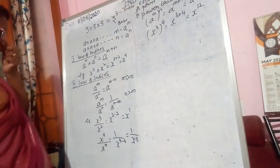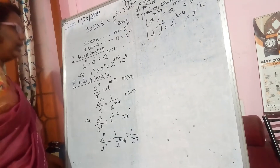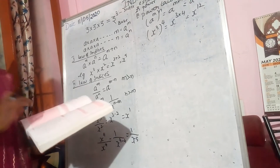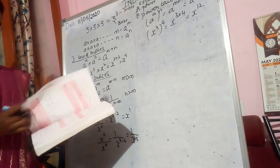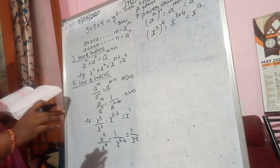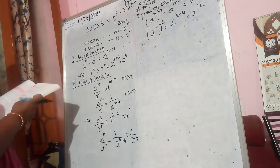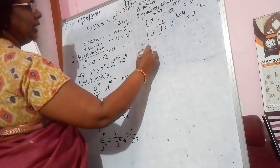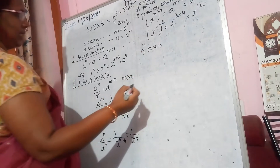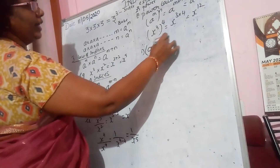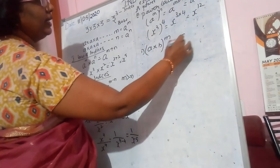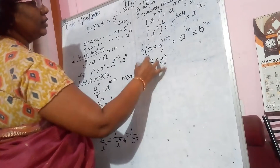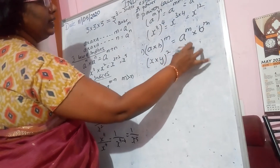Now next we are going to see some other important properties. When a product (a times b) is raised to the power of m, it becomes a raised to the power of m multiplied by b raised to the power of m. For example, (x times y) raised to the power of 2 equals x squared times y squared.